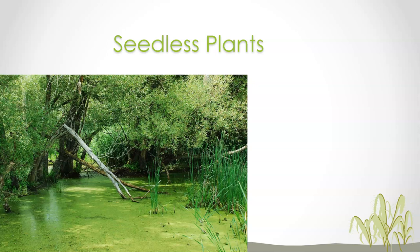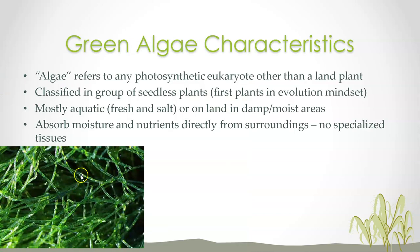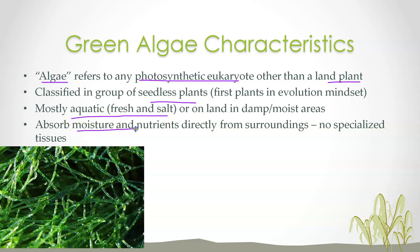There are plants that make seeds — you eat lots of seeds: various nuts, legumes, all sorts of ways that plants reproduce. But there are also seedless plants, and if you've ever seen a scene like a dense forest floor, it has a lot of seedless plants. Green algae — algae refers to any photosynthesizing eukaryote other than a land plant. It's a broad collective term. These are seedless plants. In an evolution mindset, they're mostly aquatic, meaning they need to be near water, absorbing moisture and nutrients directly from surroundings — no specialized tissue, just diffusion and osmosis.